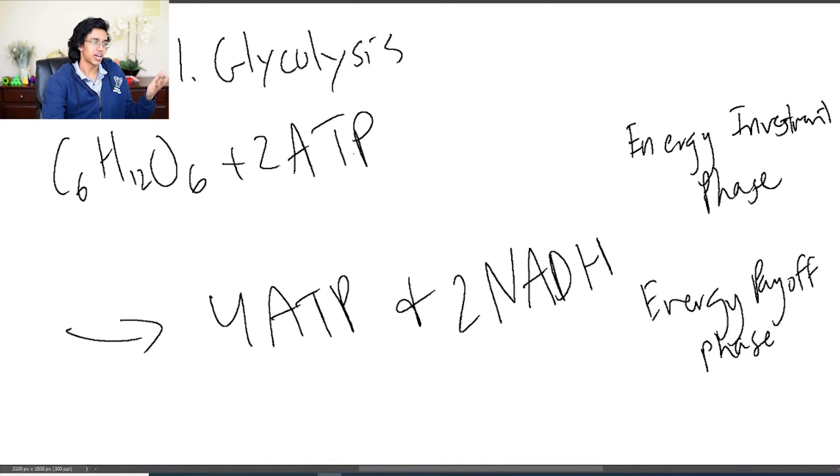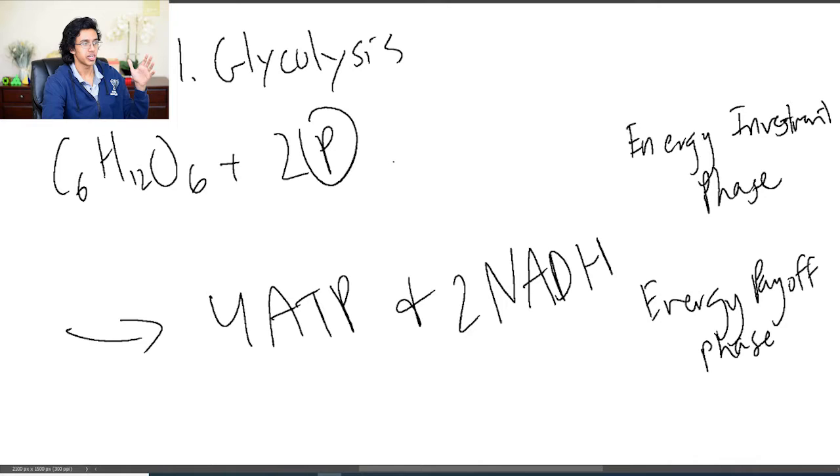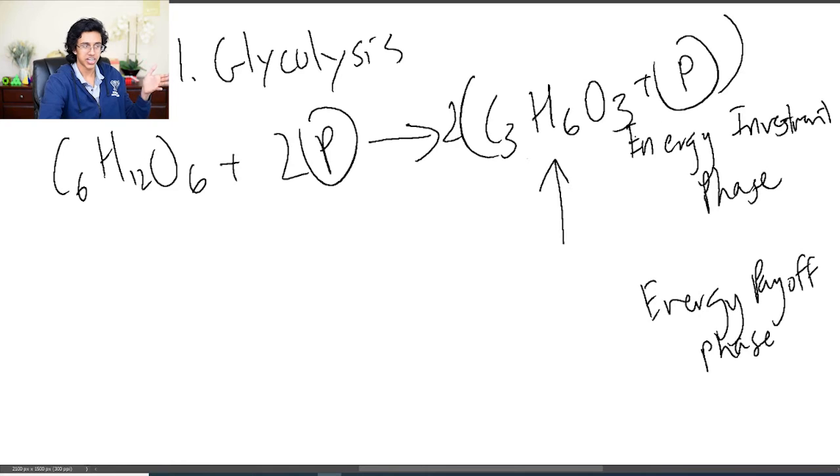But there are some important stuff that you should be aware of. Like how does two ATP become four ATP? Well basically you know that ATP has a phosphate. What the ATPs are used for in the energy investment phase is they add phosphates onto this glucose. So basically you just tag on two phosphate groups. And what happens is you're breaking up the glucose right. So it breaks it exactly down the middle and you get C3H6O3 plus P and you get two of these.